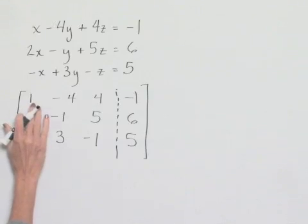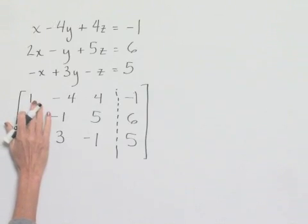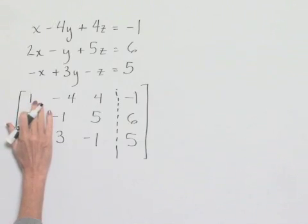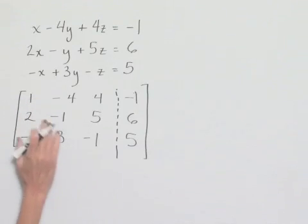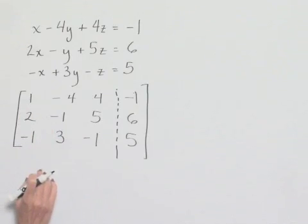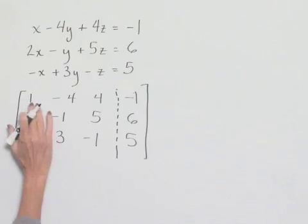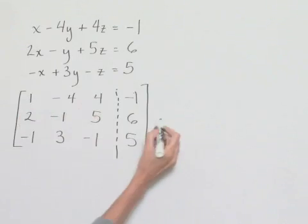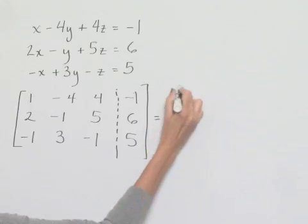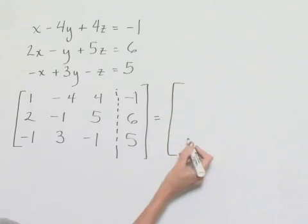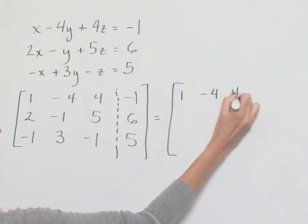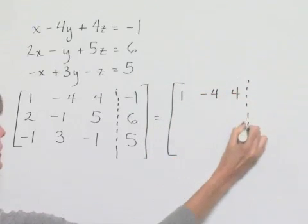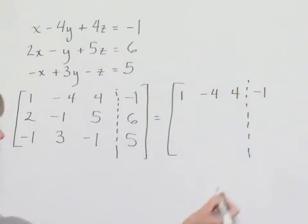Notice that in our upper left-hand corner we already have a value of 1, which is what we want. We want to end up with 1s along our diagonal and 0s below the diagonal. We've already got our first row as we want it, so let's rewrite the matrix with 1, negative 4, 4, separated by a negative 1.